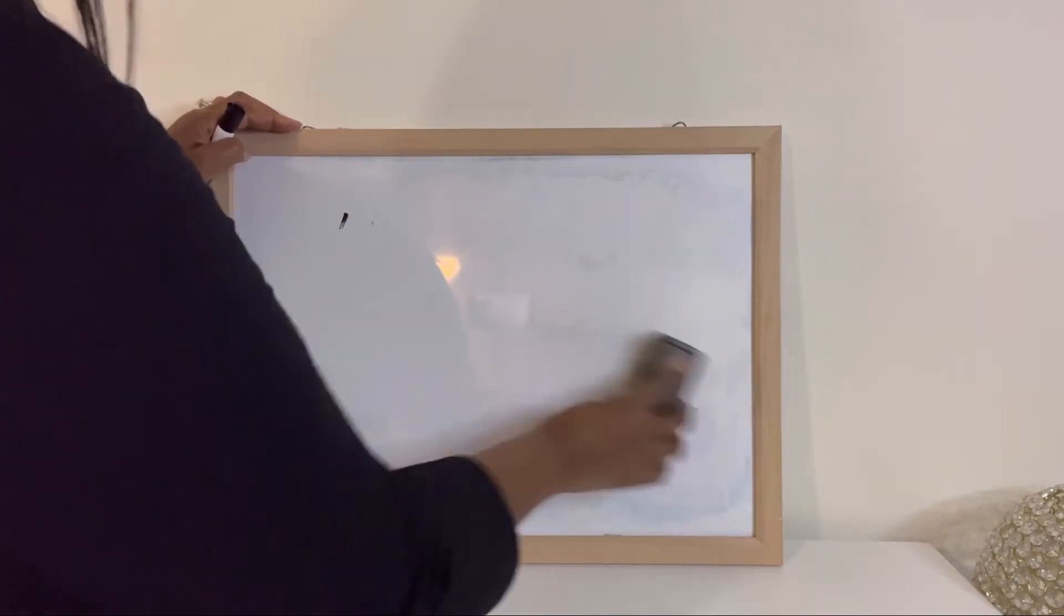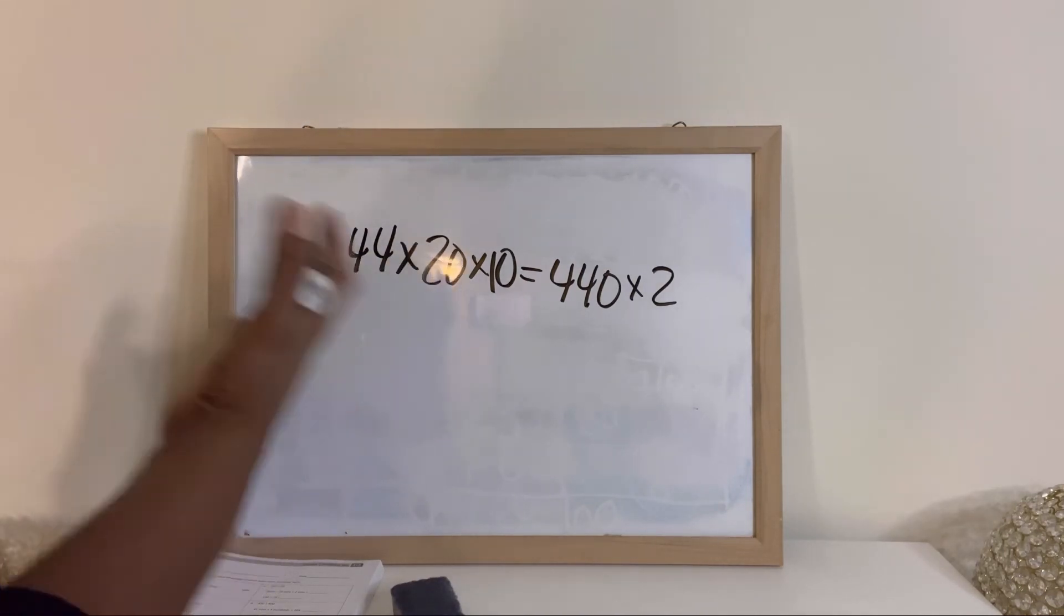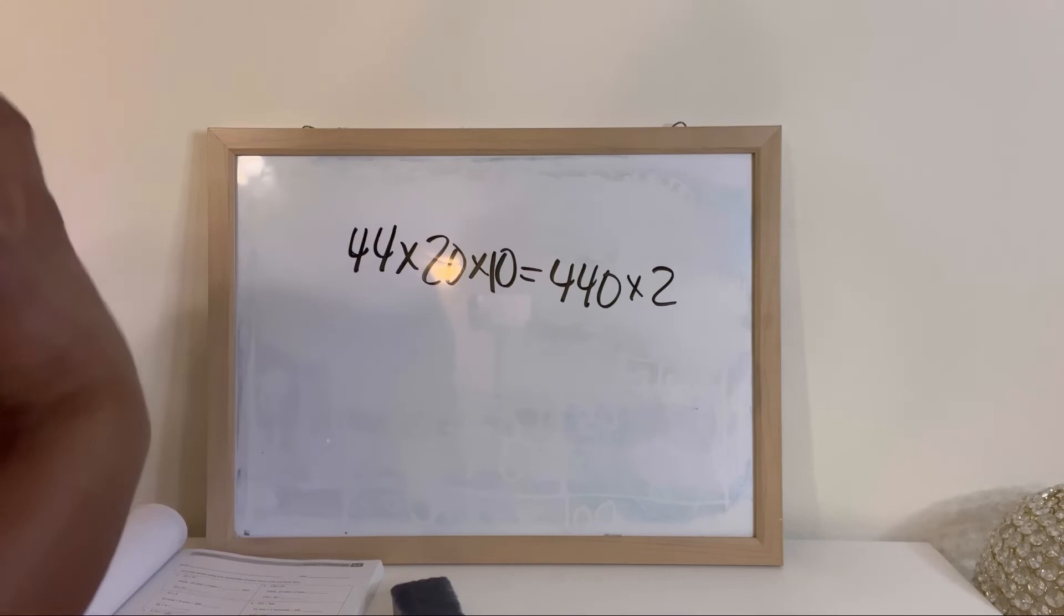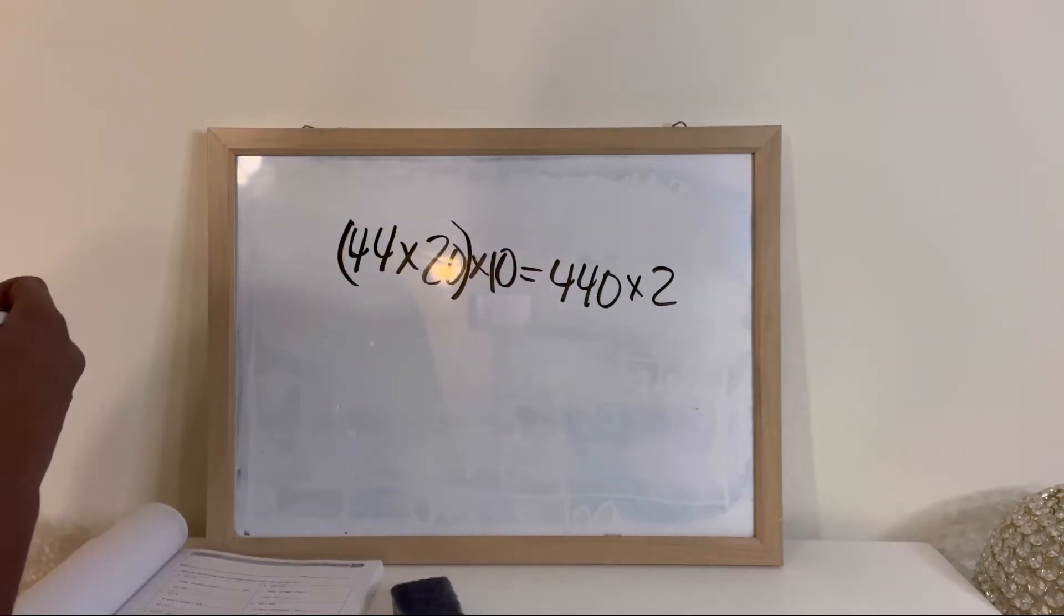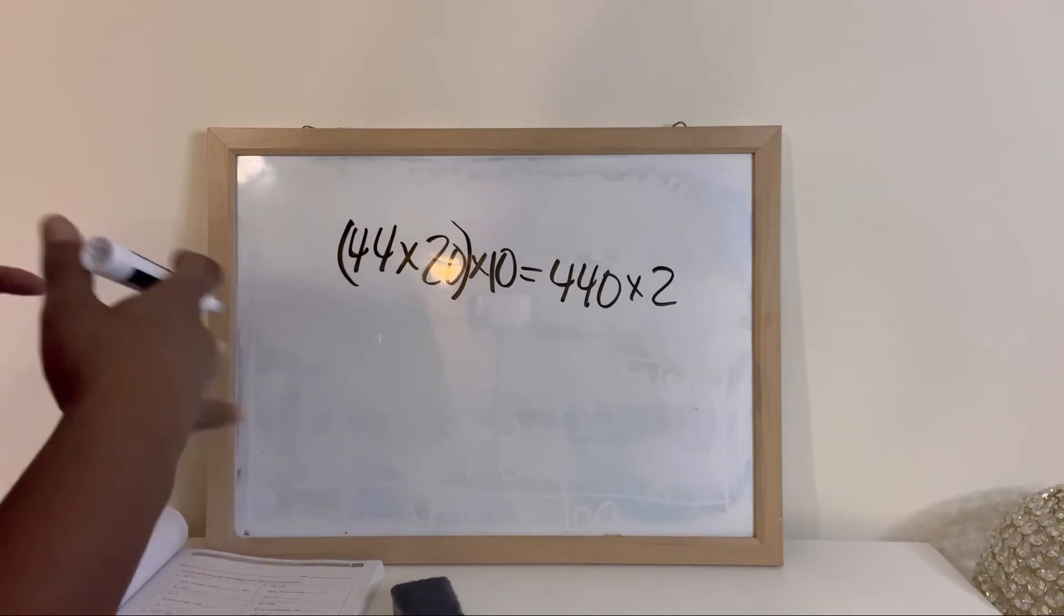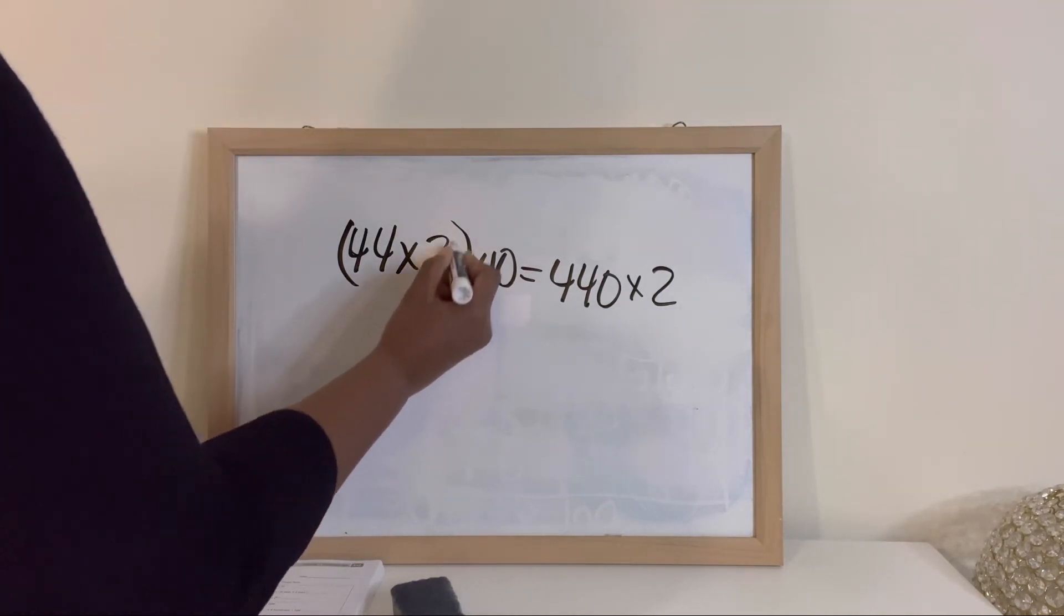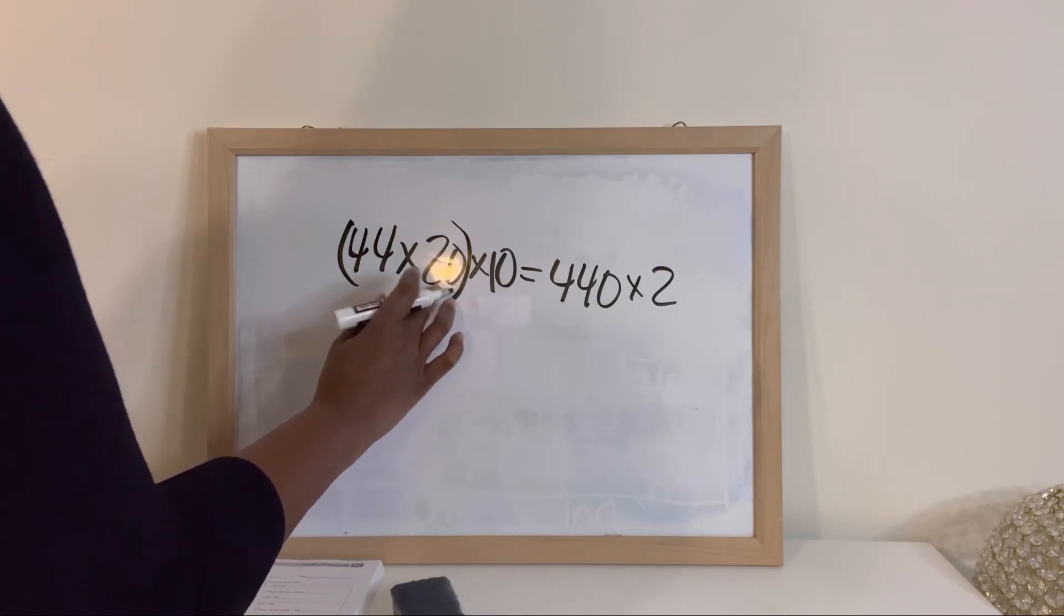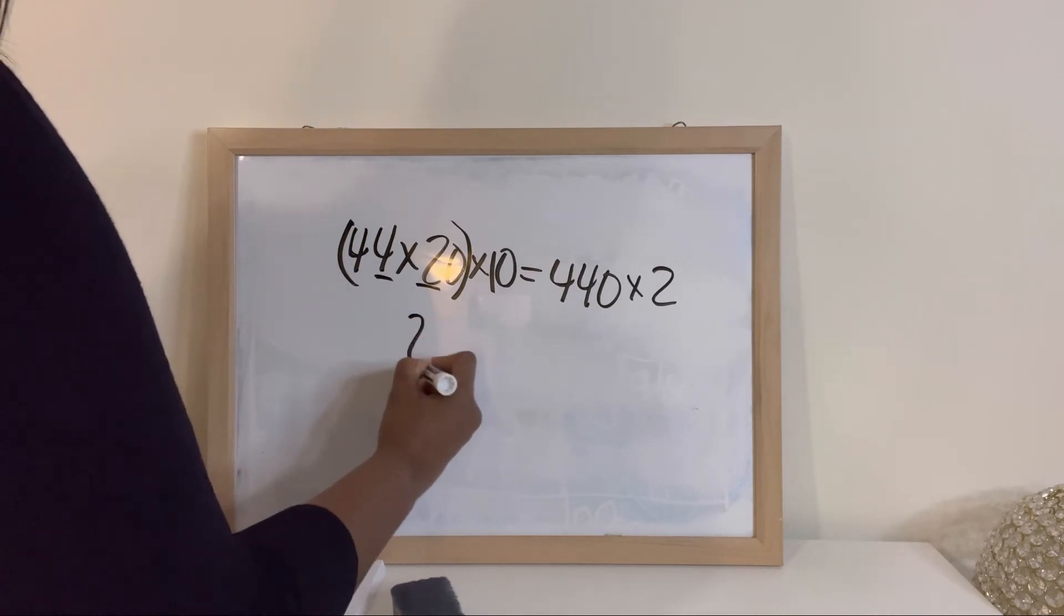So you definitely want the students to work out the problems to see if it's true. So I can do another one. So let's say they have something similar to this one. So with this one, I can use the associative property, which means whichever two I want to multiply first, I'll place them in parentheses. And that's using the associative property. And then I will go ahead and multiply to see if this is true.